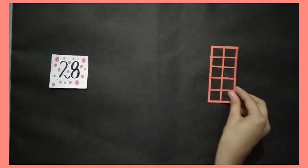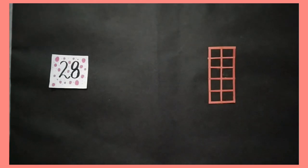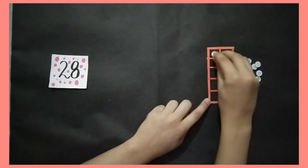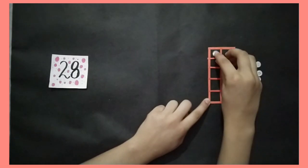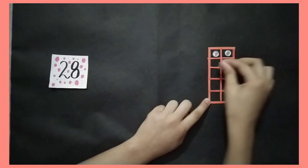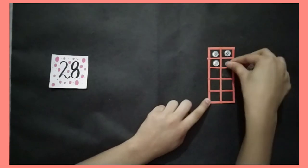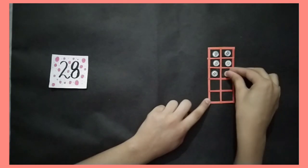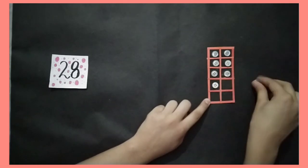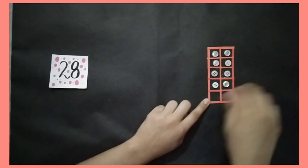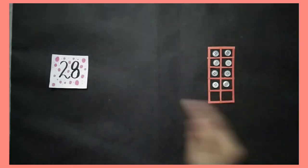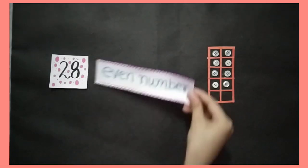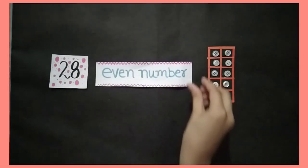Now I am placing 8 buttons in the button box. Count with me: 1, 2, 3, 4, 5, 6, 7, 8. Eight buttons form 4 pairs. So 28 is an even number.